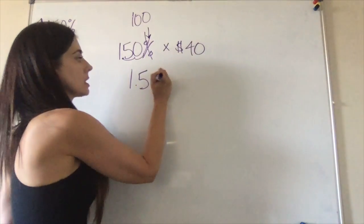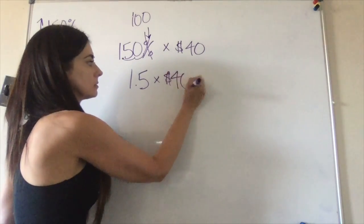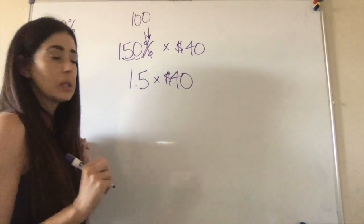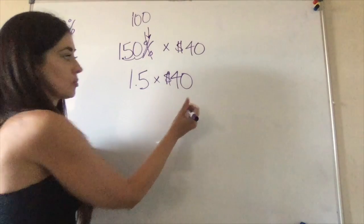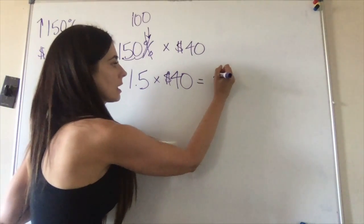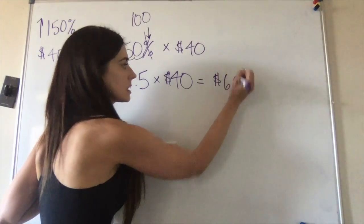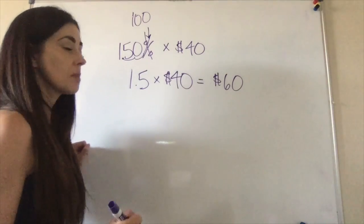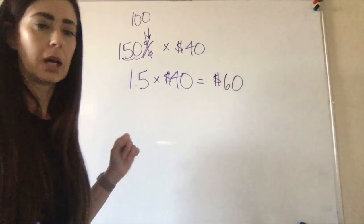Okay, now, one point five times forty equals—I just know this—sixty dollars. So the markup that Mr. Franklin...